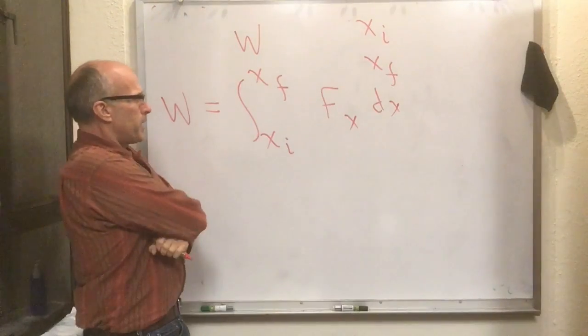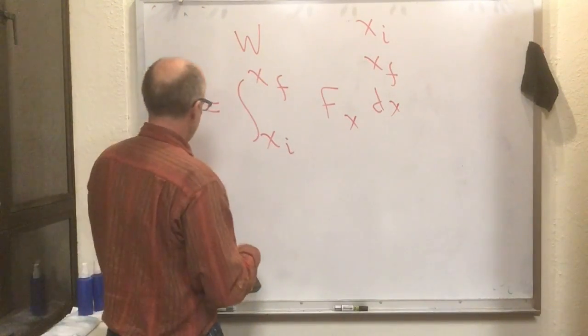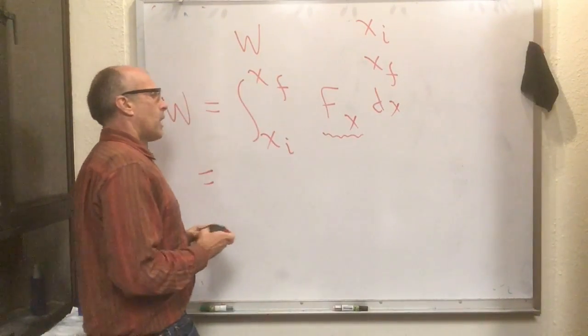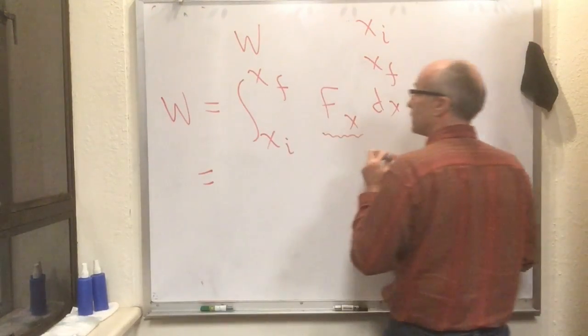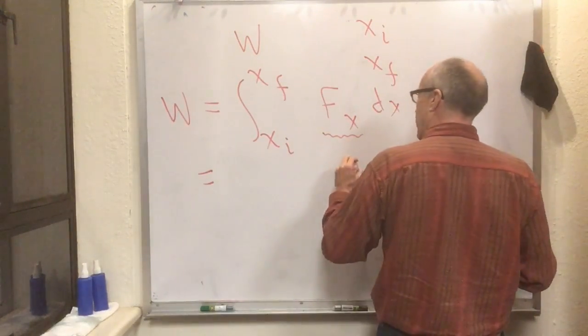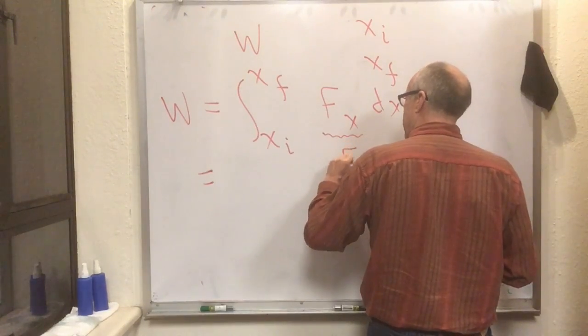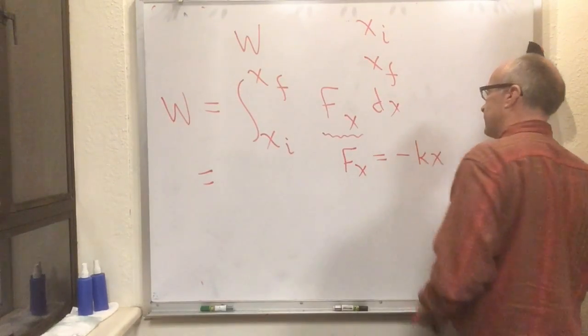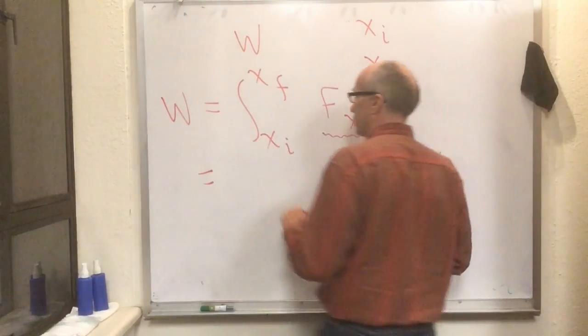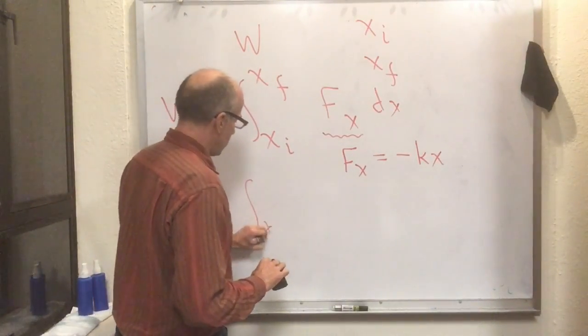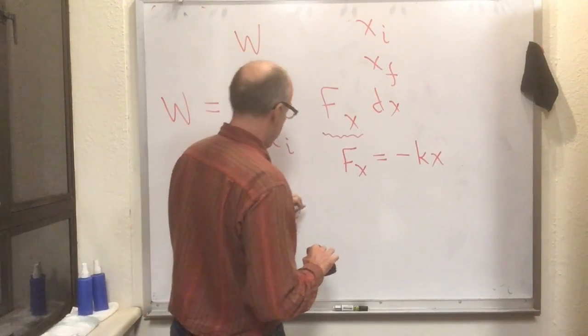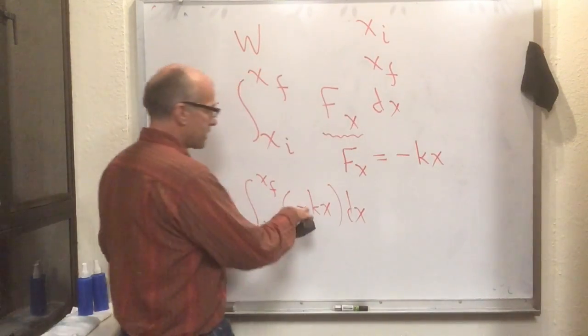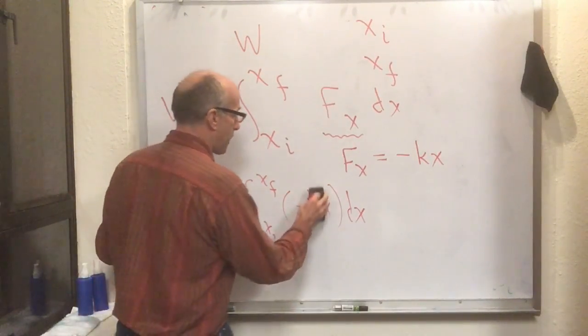That's going to be the work done by the spring. Let's use our Hooke's law formula, which said that the force generated by this spring is Fx equals minus kx. Let's punch that in: we've got the integral from x initial to x final of minus kx dx. Of course, k is a constant that came from Hooke's law, so that can come out front. Now we've got the integral from x initial to x final of x dx.